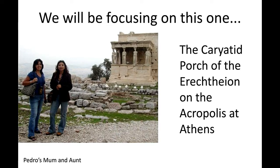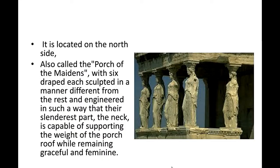We will focus on the Karyatid Porch of the Erechtheion on the Acropolis at Athens. It is located on the north side, also called the Porch of the Maidens, with six draped figures each sculpted in a different manner. They are engineered so that their slender necks are capable of supporting the weight of the porch while remaining graceful and feminine. These six famous Karyatids still exist today because they are truly load-bearing — capable of carrying great weight, in this case the porch above them.